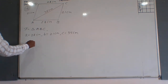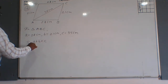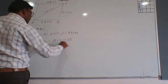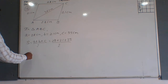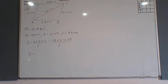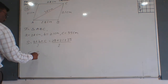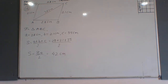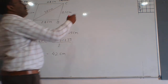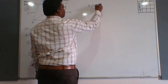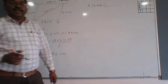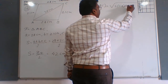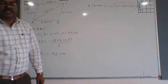First we calculate the semi-perimeter: s = (28 + 21 + 35) divided by 2 = 84 divided by 2 = 42 cm. Now we find the area of triangle ABC using Heron's formula: Area = √(s × (s−a) × (s−b) × (s−c)).